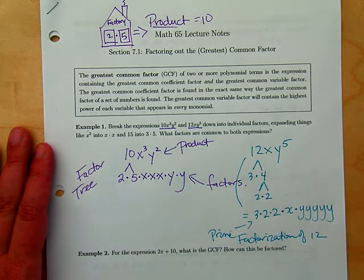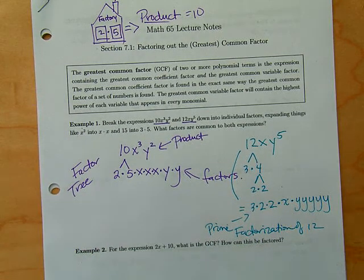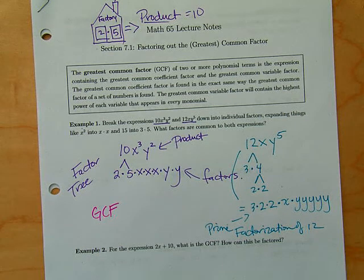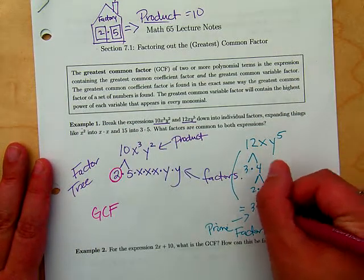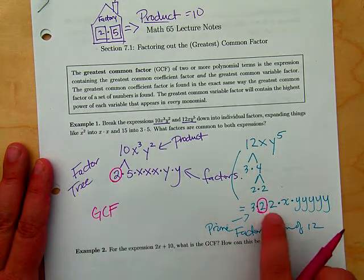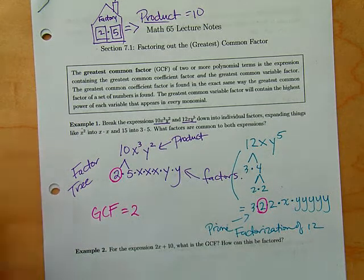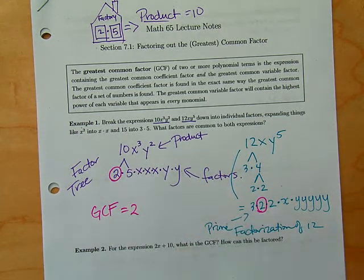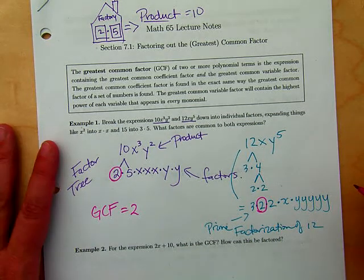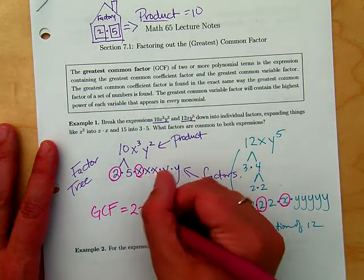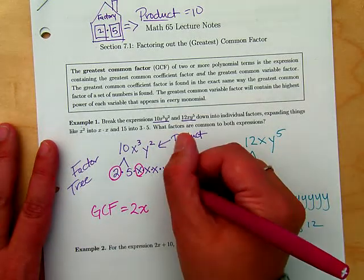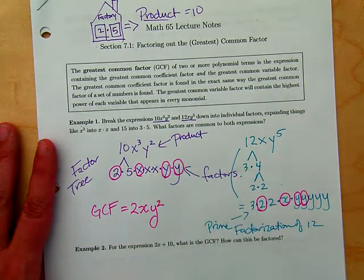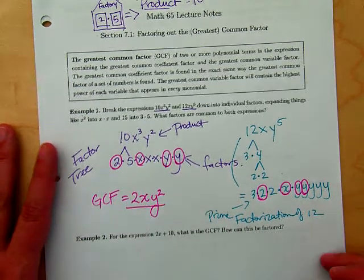When we're trying to find the GCF, it's going to be all the factors they have in common. They both have a two in common. Since the first term only has one two and the second has two twos, we can only use one two — that's what they both share. They have x to the first power in common, and two y's in common, which we write as y². So their greatest common factor is 2xy².